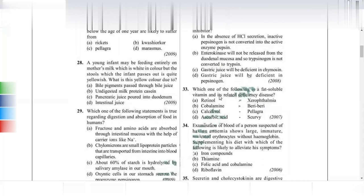An infant fed entirely on mother's milk, which is white, passes yellowish stools. This yellowish color is due to bile pigments.